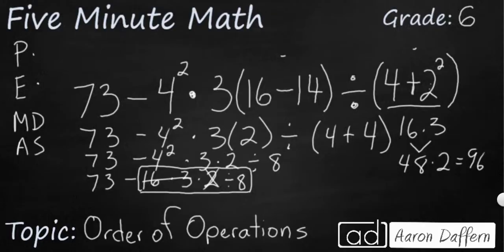And then I need to divide that by 8. So 96 divided by 8, well, that's going to end up as 12. So what I end up having is 73 minus 12. And 73 minus 12, that is going to make 61.